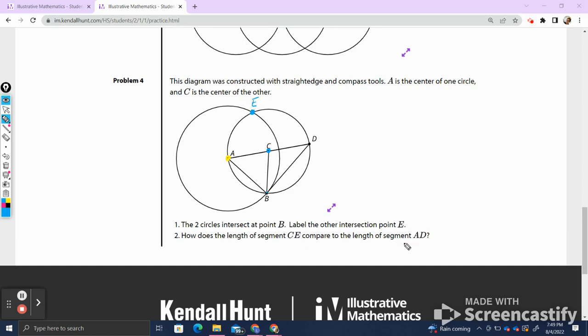How does the length of segment CE compare to the length of segment AD? So I'm looking at AD, which goes all the way across, and I immediately notice it's made up of two radiuses. And if I'm thinking of CE, which in this case I need to construct, I see that it's also a radius. So I can therefore conclude CE is half the length of AD. And I can see that because it takes one part to create CE, and it takes two of the same parts to create AD. Most questions involving circles is going to go back to that definition of a circle, which is very useful in geometry.